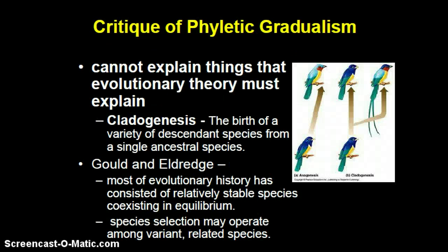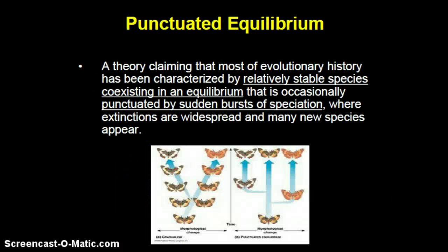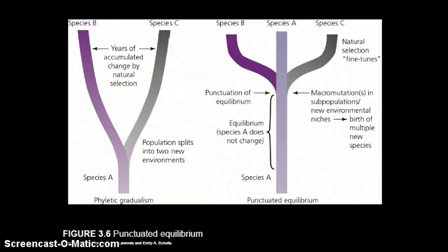The critique of phyletic gradualism comes from Gould and Eldridge in cladogenesis — it cannot explain everything evolutionary theory must explain. As Gould and Eldridge note, most of evolutionary history has consisted of relatively stable species existing in co-equilibrium with one another. Species selection may operate among variant related species. This equilibrium is punctuated at particular points in time by sudden bursts of speciation, where extinctions are widespread and many new species appear — this is the notion of punctuated equilibrium. If you're a visual person, I'd recommend looking at graphic models showing different species transforming over time in the context of phyletic gradualism and punctuated equilibrium.